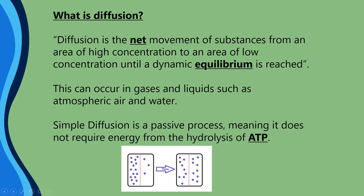Simple diffusion is described as a passive process. In A-level biology you always need to be specific, and what this specifically means is that it doesn't require energy that is released from the hydrolysis of ATP. Never say that it's energy created by the hydrolysis of ATP because that's not right — energy can neither be created nor destroyed. It's released; it can just be changed from one form, which in ATP will be chemical, into another.